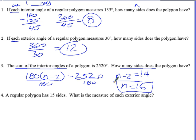And then finally, it says a regular polygon has 15 sides. What is the measure of each exterior angle? So that's when we do 360 divided by 15. And that gives us 24 degrees. All right. That is it for the first video. Thank you for watching.